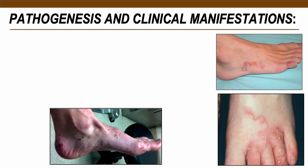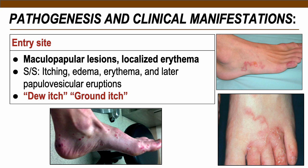Hookworm pathogenesis involves three categories: skin at the entry site, lungs during larval migration, and small intestine where adults reside. At the skin — usually lower limbs — penetration of filariform larva produces maculopapular lesions and localized erythema. These are known as dew itch or ground itch, related to contact with dewy soil, with itching, edema, erythema, and later papulovesicular eruptions with pus lasting up to two weeks.